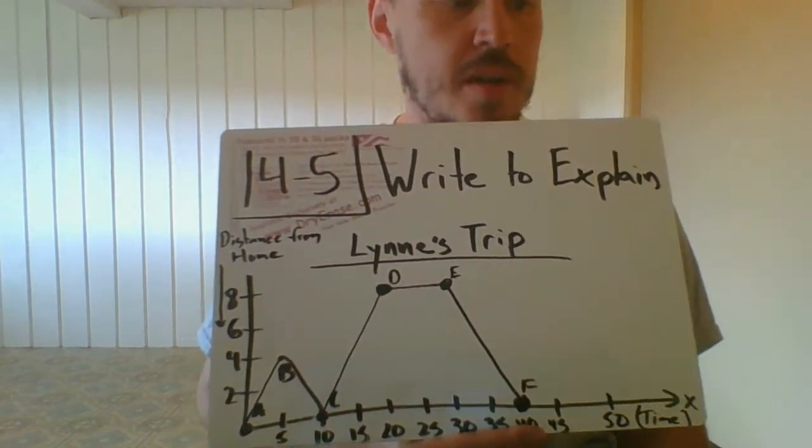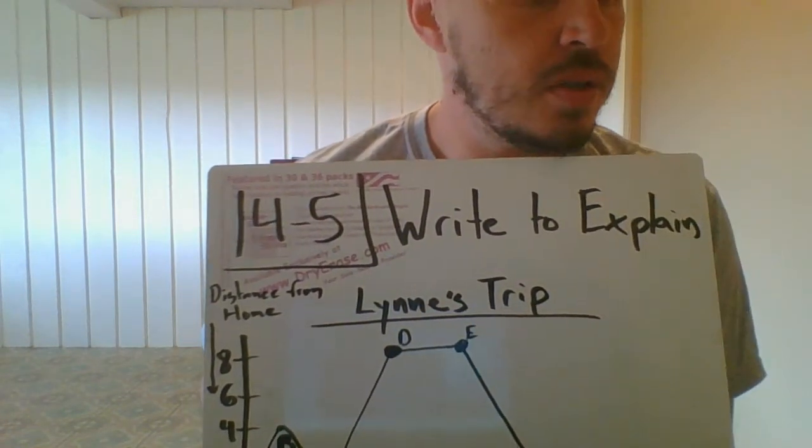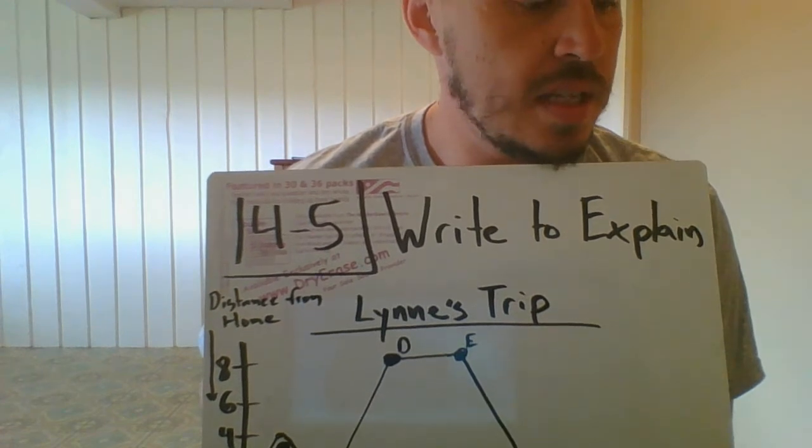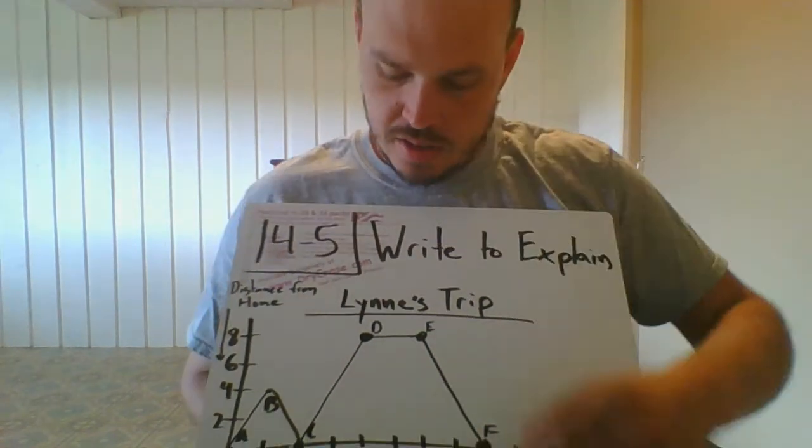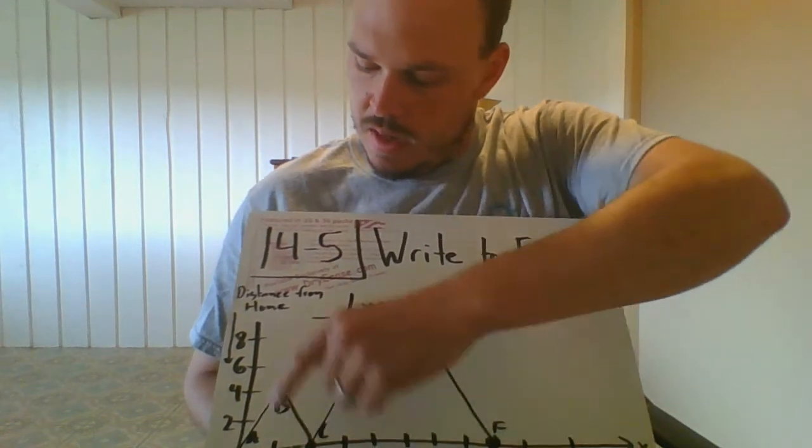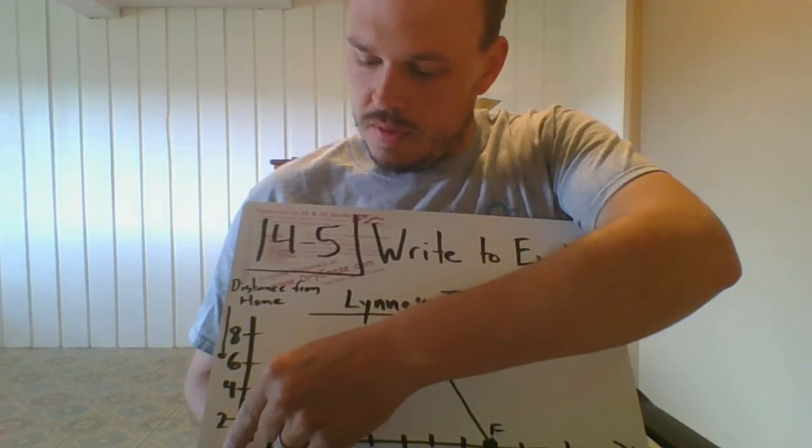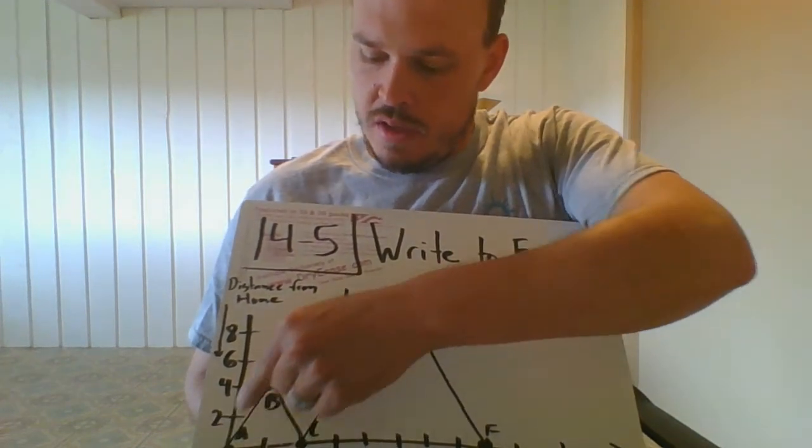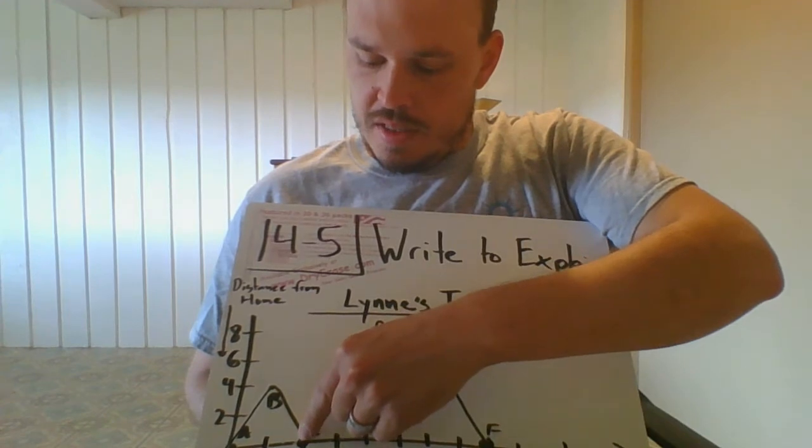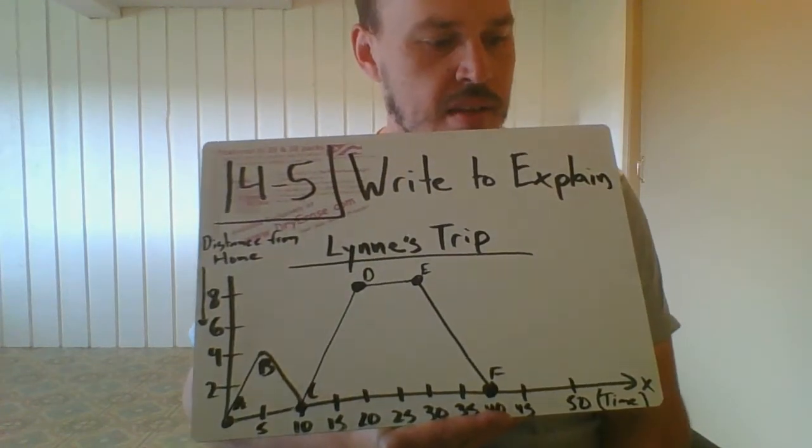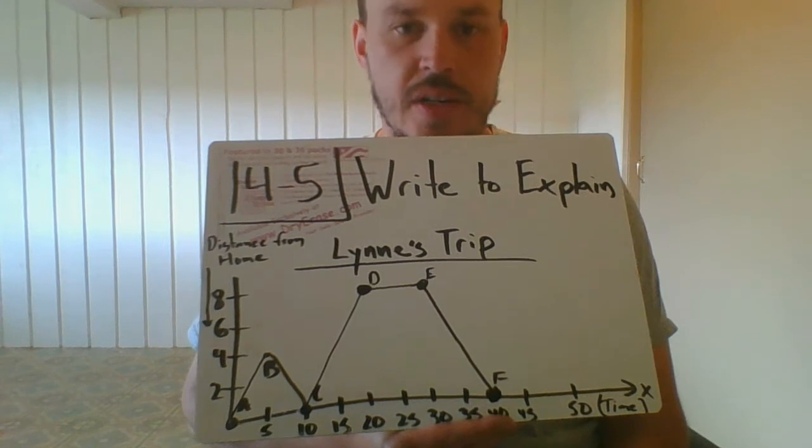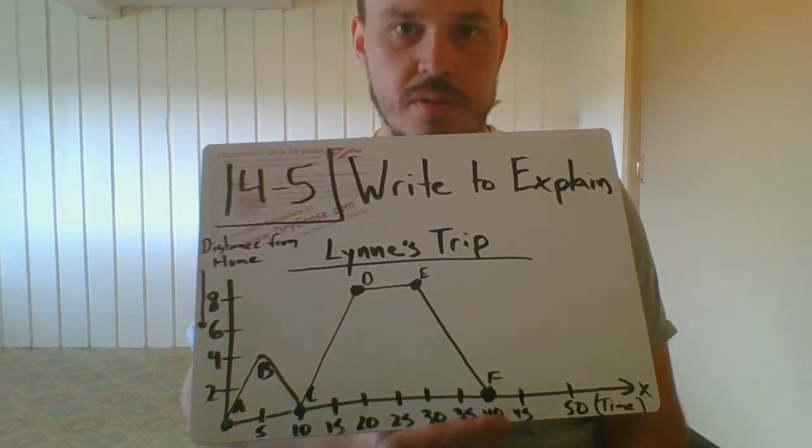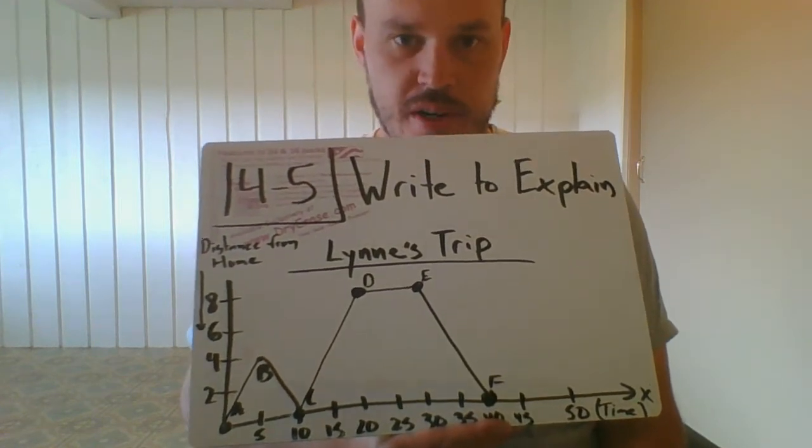Number two reads: what does point C tell you about Lynn's location? We have point C right here. This is distance from home, so she starts her trip at home, she leaves. Point C - I think she went back home. She probably forgot something, maybe she forgot her purse or maybe she forgot reusable bags, something along those lines.